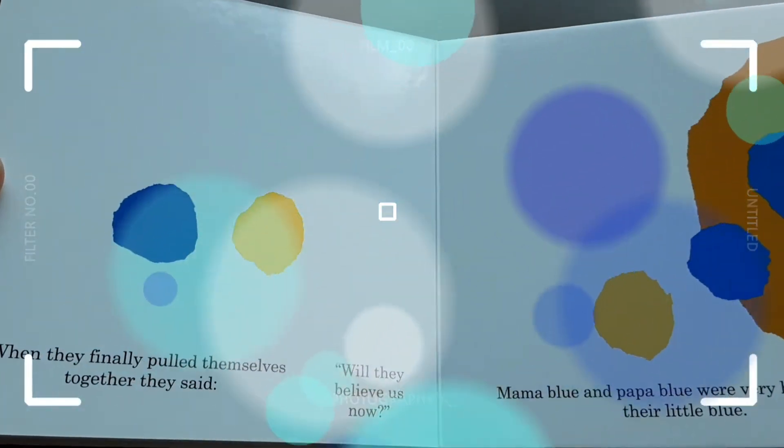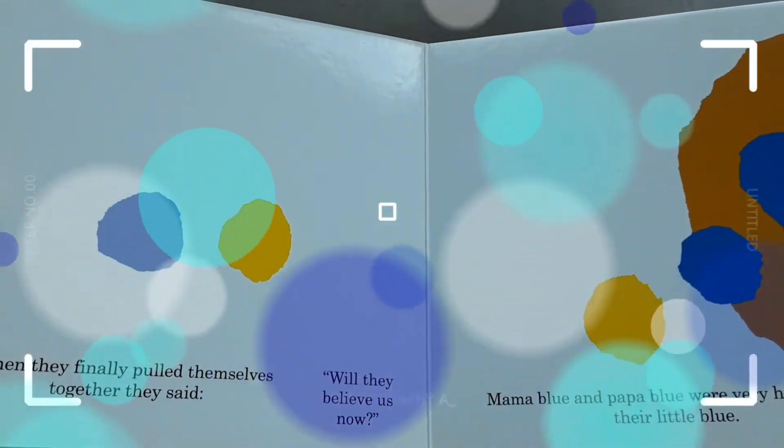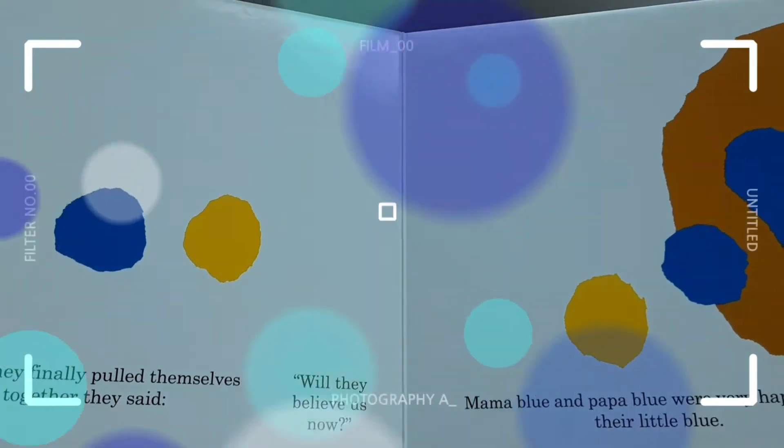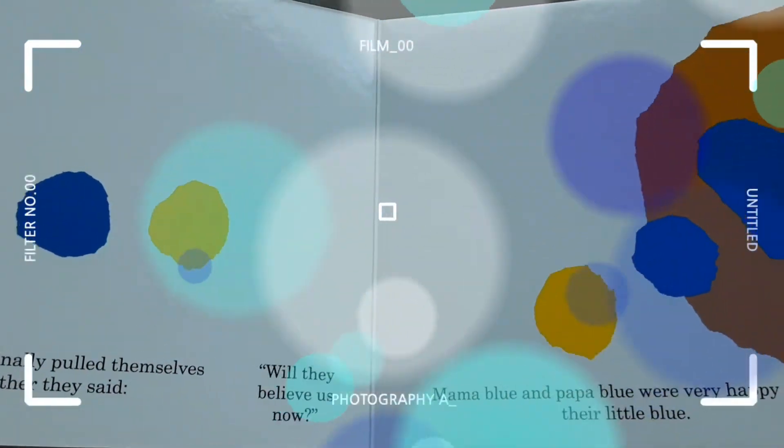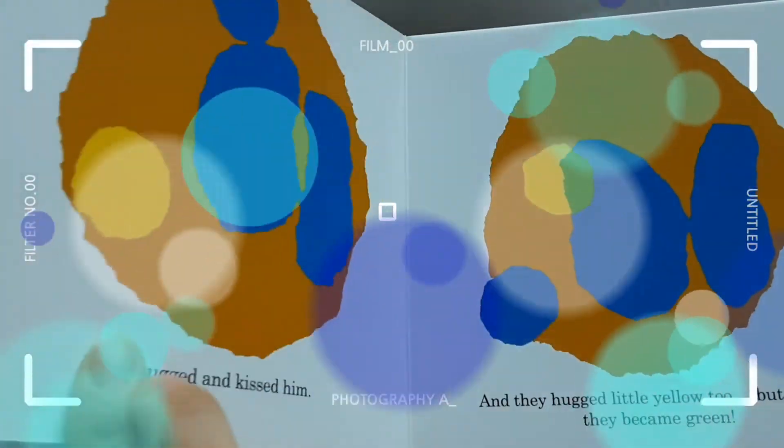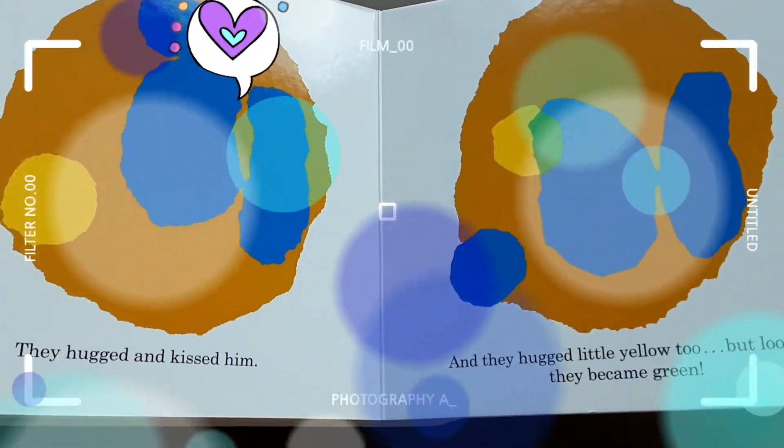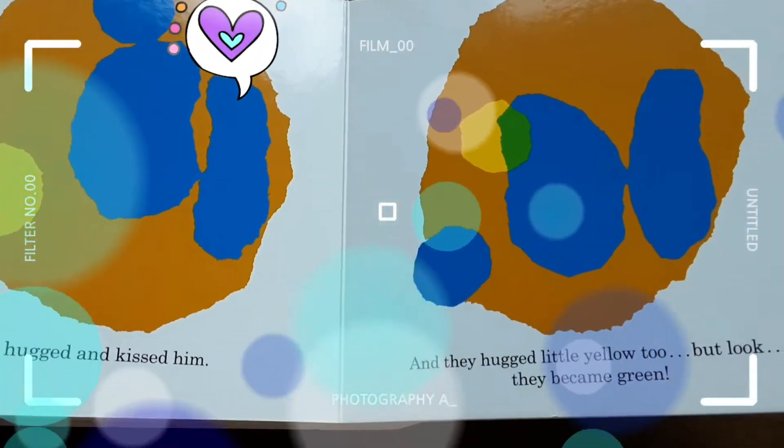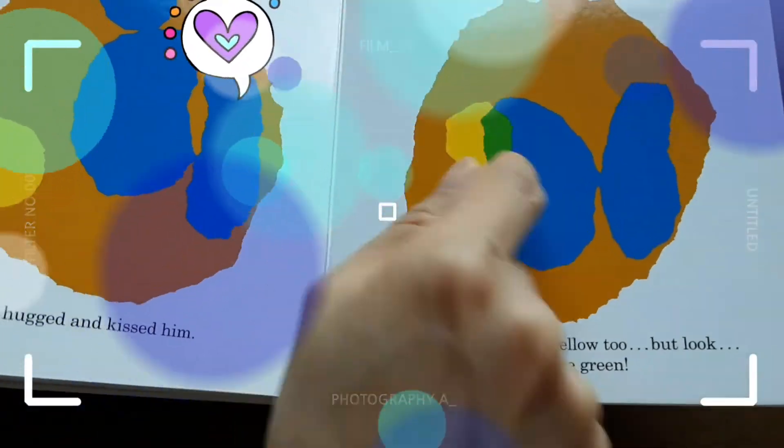When they finally pulled themselves together, they said, 'Will they believe us now?' Mama Blue and Papa Blue were very happy to see their Little Blue. They hugged and kissed him, and they hugged Little Yellow too. But look! They became green.